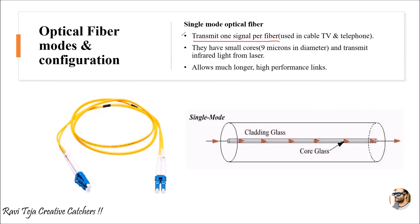Optical fibers have two modes with respect to configuration. The first is single mode optical fiber — as the name indicates, this optical fiber can transmit only one signal through a single optical fiber.